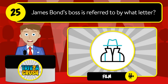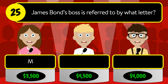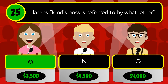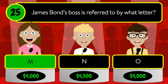Question number twenty-five: James Bond's boss is referred to by what letter? Is it M, N, or O? The correct answer is M.